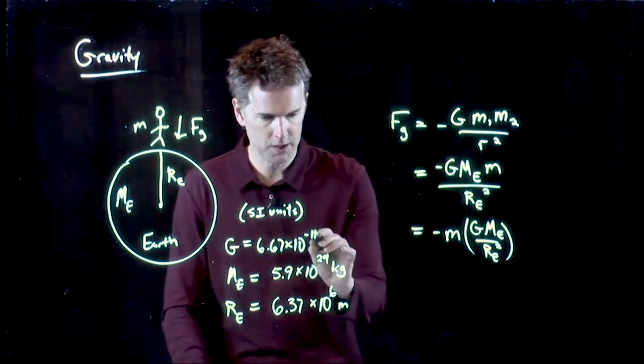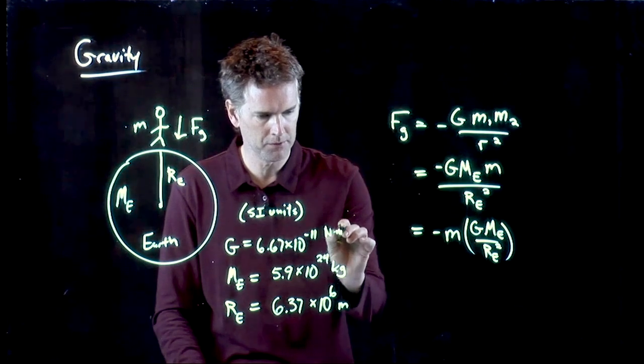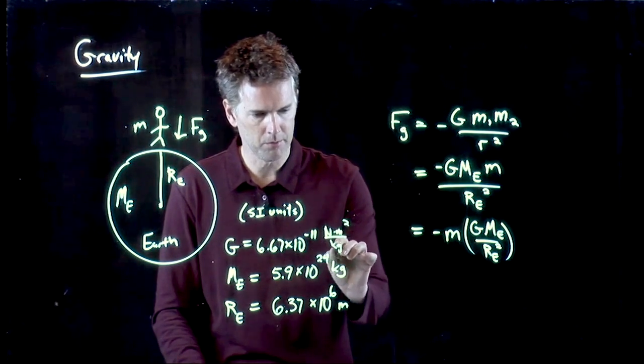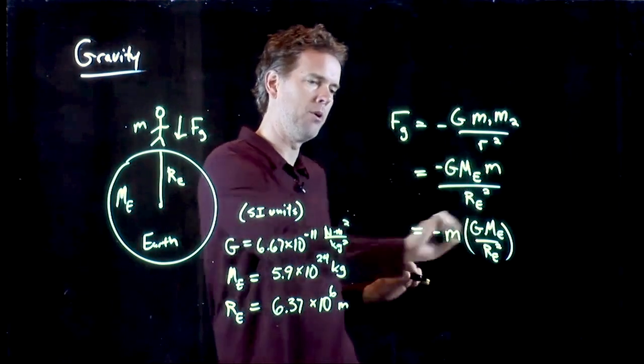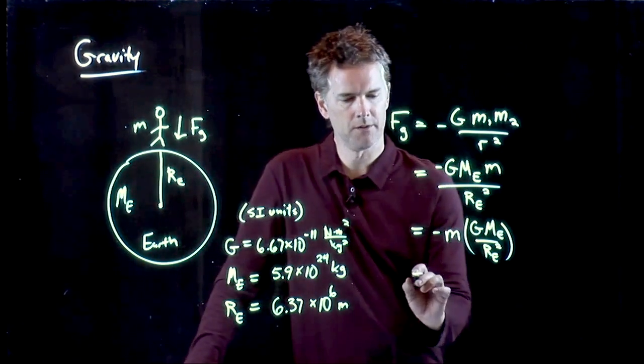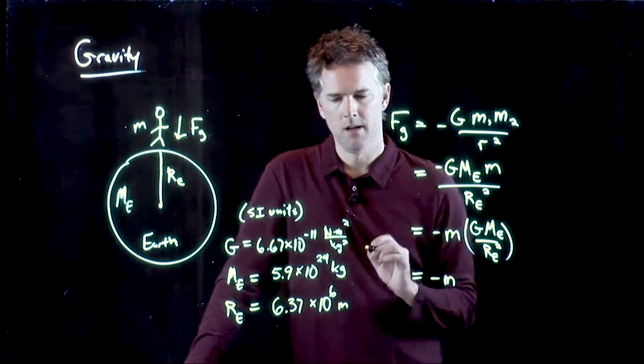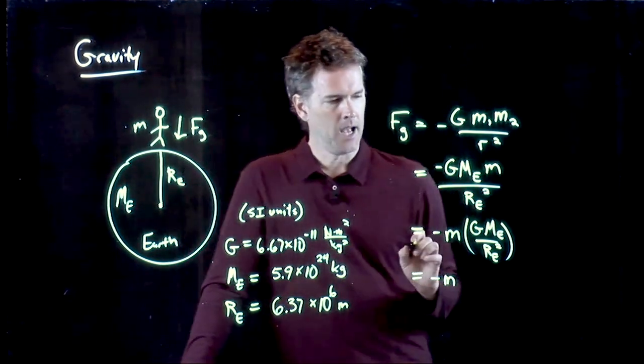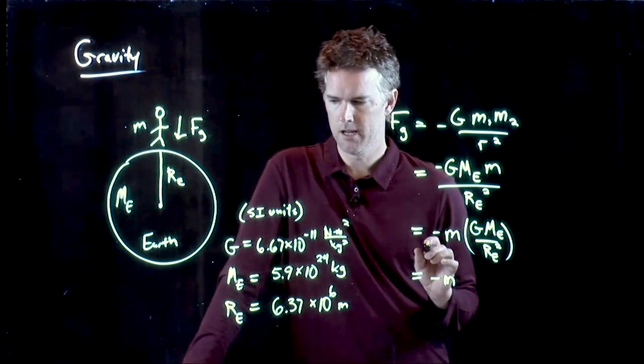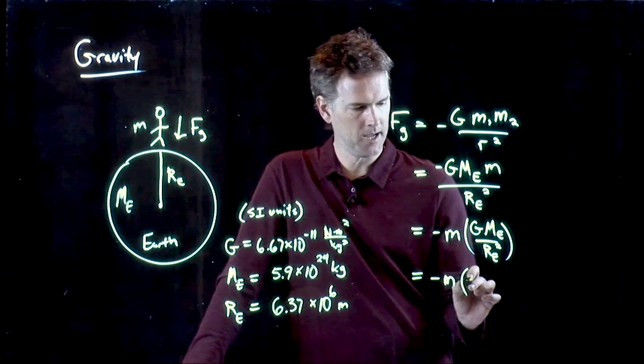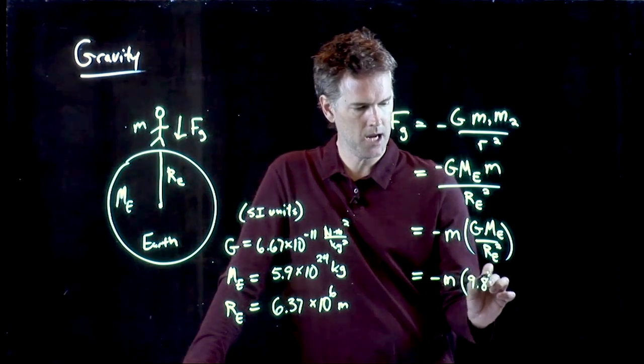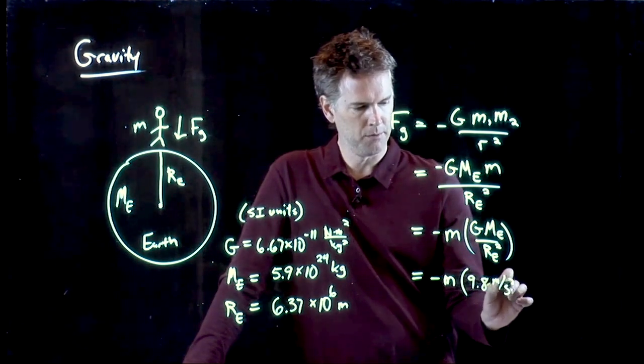And we said that the units on G, of course, were Newton meters squared per kilogram squared. So we take all those numbers and we punch them in here. Why don't you guys try that in your calculator and tell me what you get. And I will tell you what I get if I just approximate it in my head. I'm gonna say it is 9.8 meters per second squared.